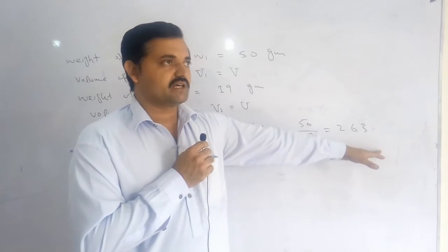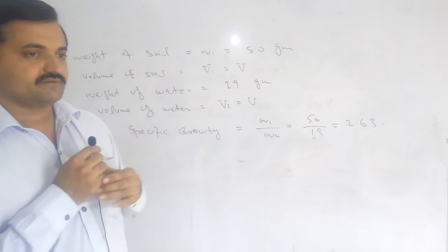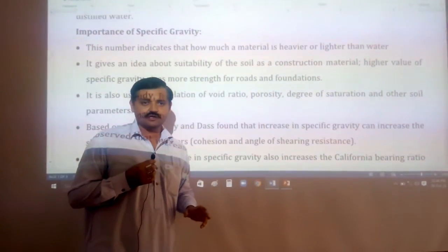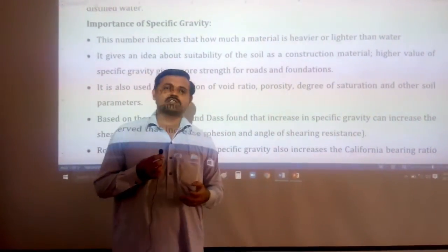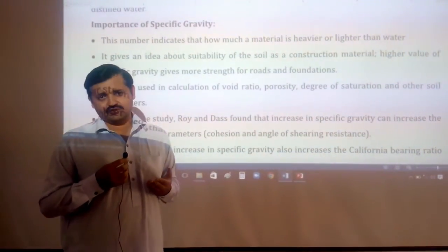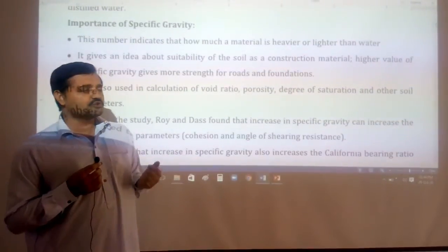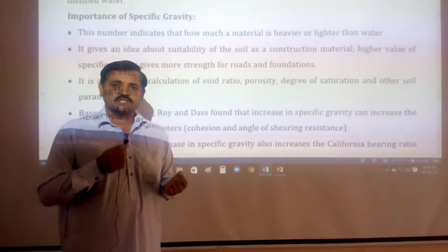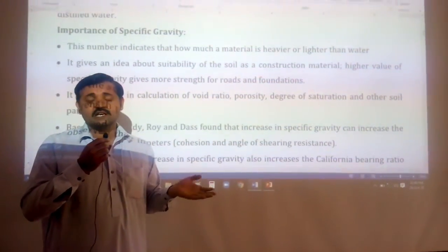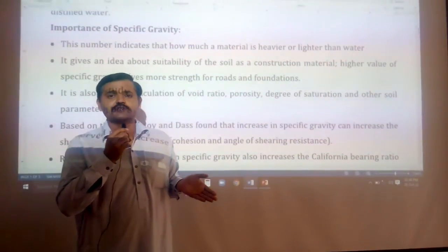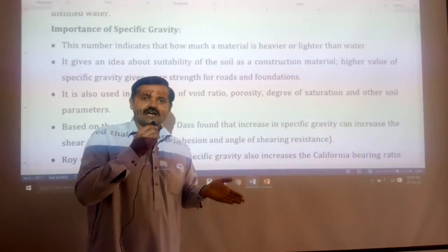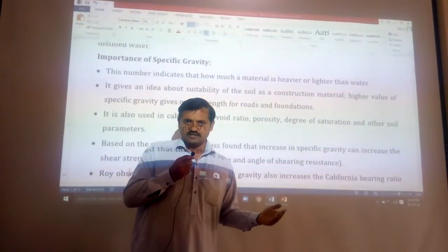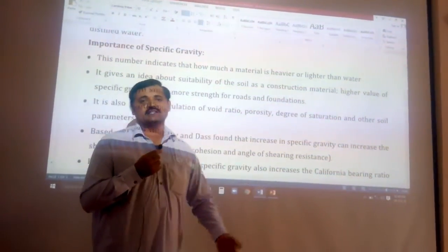Specific gravity has no units because it is the ratio of two weights. Let us discuss why it is important in civil engineering to find the specific gravity of soil. Specific gravity gives us an idea of how much a substance is heavier or lighter than water. The specific gravity of water is 1. Anything with a specific gravity more than 1 will be heavier than water, and anything less than 1 will be lighter than water. A substance lighter than water will float, and a substance heavier than water will sink.